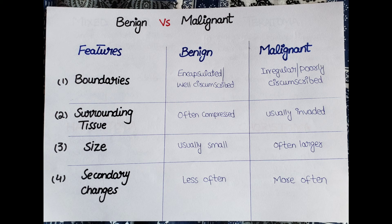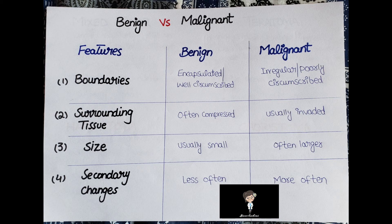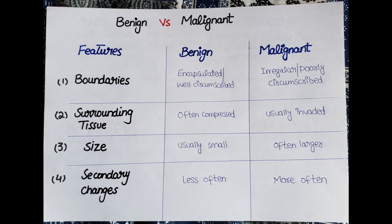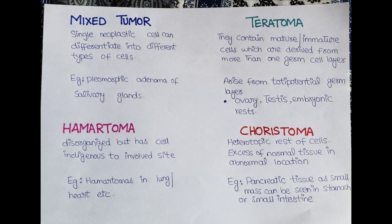Exceptions do exist — sometimes benign tumors are very large while malignant tumors can be very small. The next feature is secondary changes: in benign tumors, secondary changes such as hemorrhage, necrosis, or degeneration are less common, whereas these are very common in malignant tumors.